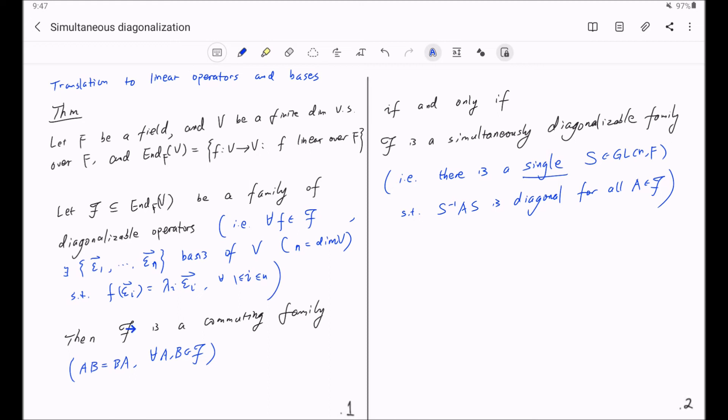Then, the script F is a commuting family. Namely, any two linear operators in script F will commute with each other. F is a commuting family if and only if F is a simultaneously diagonalizable family.